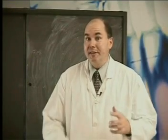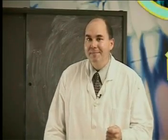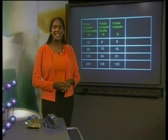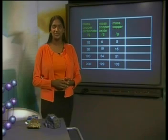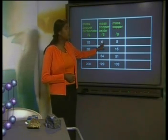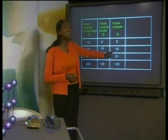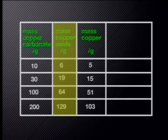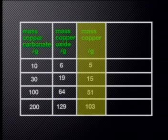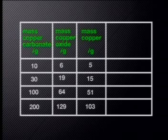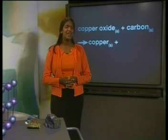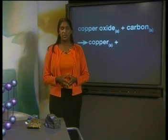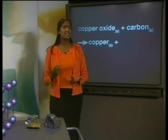Heating copper oxide with carbon in an open system causes it to change to copper. But what happens to the mass? Does it increase, decrease, or stay the same? Let's look at some data. 6 grams of copper oxide forms 5 grams of copper. 19 grams of copper oxide forms 15 grams of copper. All the samples of copper oxide lose mass when they react with carbon. The missing mass must once again be a gas that escapes into the air.